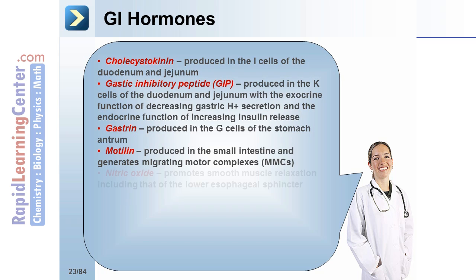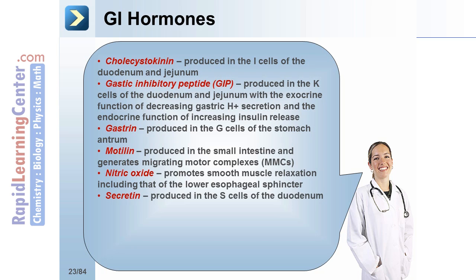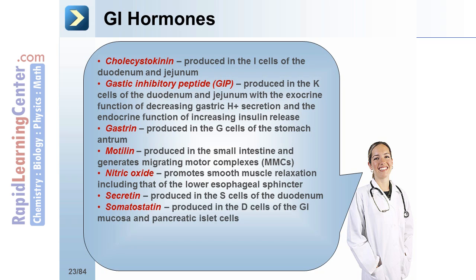Nitric oxide promotes smooth muscle relaxation, including that of the lower esophageal sphincter. Secretin is produced in the S cells of the duodenum, causing an increase in pancreatic bicarbonate and bile secretion, and a decrease in gastric acid secretion. Somatostatin is produced by the D cells of the GI mucosa and pancreatic islet cells, causing a decrease in gastric acid and pepsinogen secretion, gallbladder contraction, insulin and glucagon release, and pancreatic and small intestinal fluid secretion.